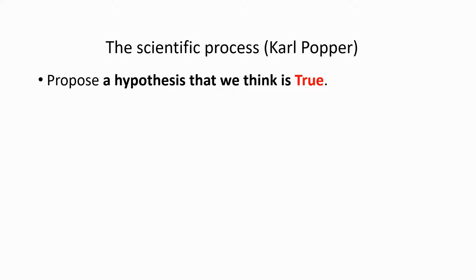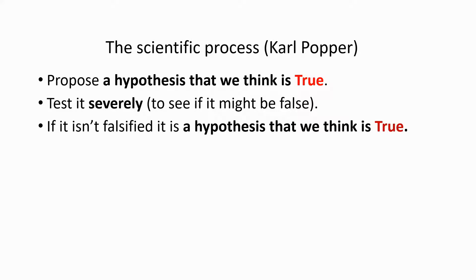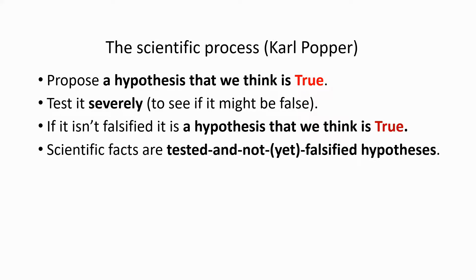Let's look at a quick review of the scientific process we've been talking about — the one we attribute to Karl Popper. First, we propose a hypothesis that we think is true to explain some phenomenon or observation that we made. We then test the hypothesis severely to see if it might be false, looking at the predictions the hypothesis makes and making measurements to see whether they're true or false. If the measurements don't succeed in falsifying the hypothesis, then we consider we have a hypothesis that we still think is true — a true explanation for the phenomenon. All scientific facts, then, are these tested and not yet falsified hypotheses.